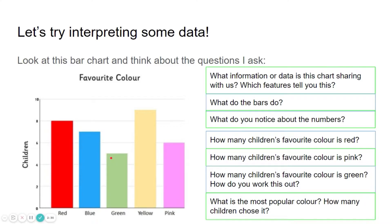What is the most popular colour? How many children chose it? So you have to look at the bar chart and you can see that the yellow bar is the tallest. You'll get questions like this sometimes, which ask you to think in a different way. So it's in between eight and ten. So the number between eight and ten is nine. So nine children chose yellow.